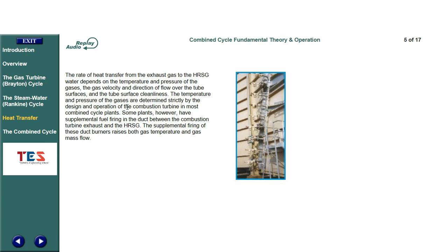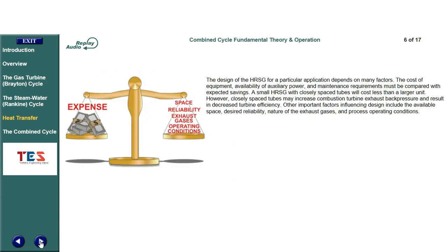The temperature and pressure of the gases are determined strictly by the design and operation of the combustion turbine in most combined cycle plants. Some plants, however, have supplemental fuel firing in the duct between the combustion turbine exhaust and the HRSG. The supplemental firing of these duct burners raises both gas temperature and gas mass flow. The design of the HRSG for a particular application depends on many factors. The cost of equipment, availability of auxiliary power, and maintenance requirements must be compared with expected savings. A small HRSG with closely spaced tubes will cost less than a larger unit.